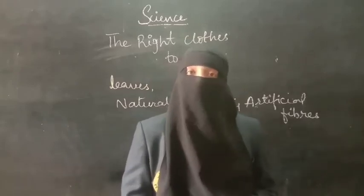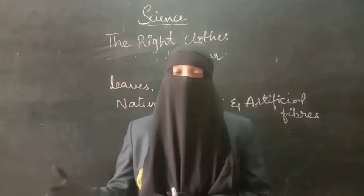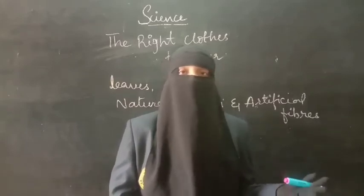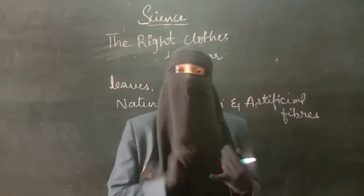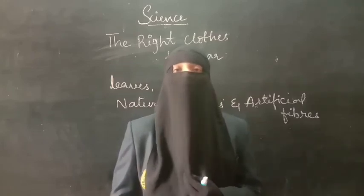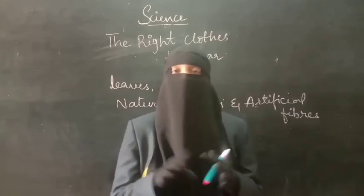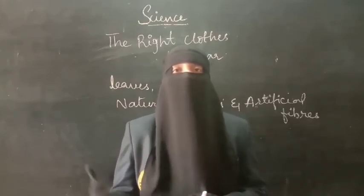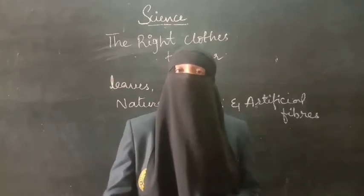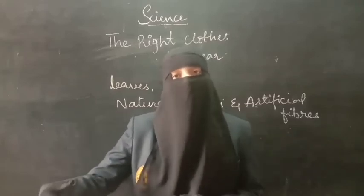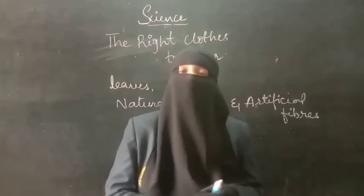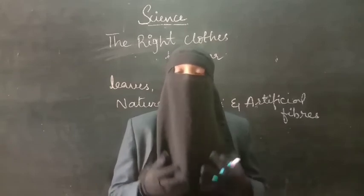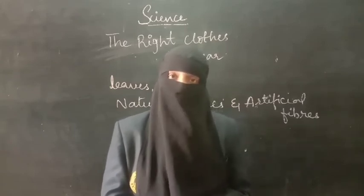Which animals give us wool? Sheep, goat, camel, yak — all these animals have more hair on their bodies, and that hair is nothing but wool. The hair is removed from the body of the animal, and by some process we get woolen clothes. Silk is also a kind of natural fiber.